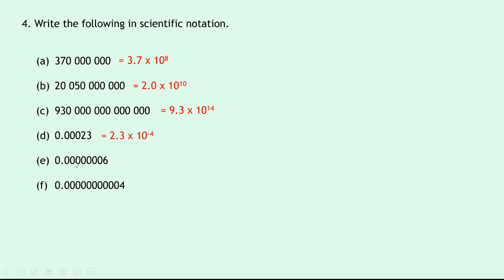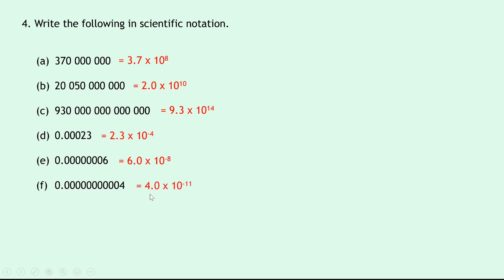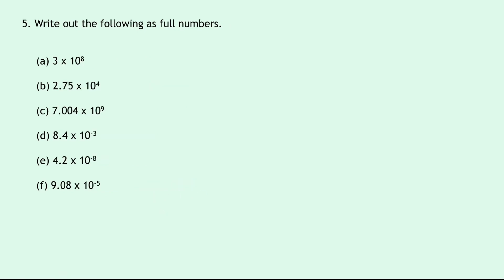For part e, 0.0000006 becomes 6.0 times 10 to the minus 8 — again a negative power because we're moving the decimal point to the left. And lastly, part f, this really small number — putting the decimal point in after the 4 and moving back a certain number of decimal places gives us 4.0 times 10 to the power of minus 11.